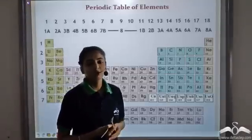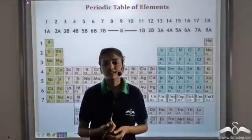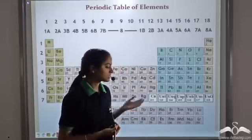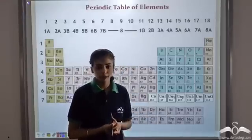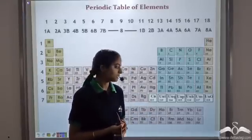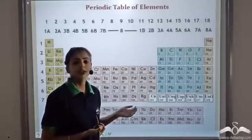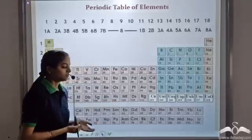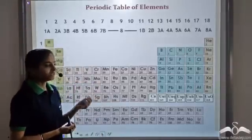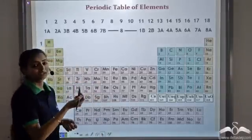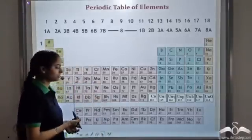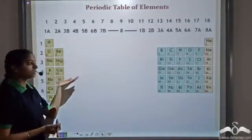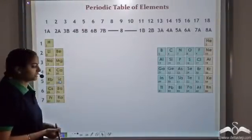This is the modern periodic table as given by Henry Moseley. This is the present accepted form of the periodic table which includes 118 elements discovered so far. We will not deal with the entire periodic table right now — we will deal with only this part of the periodic table.